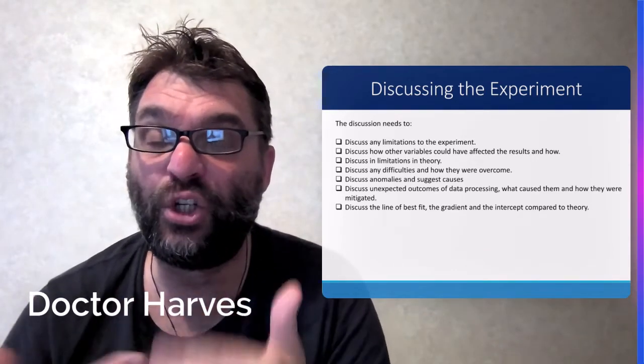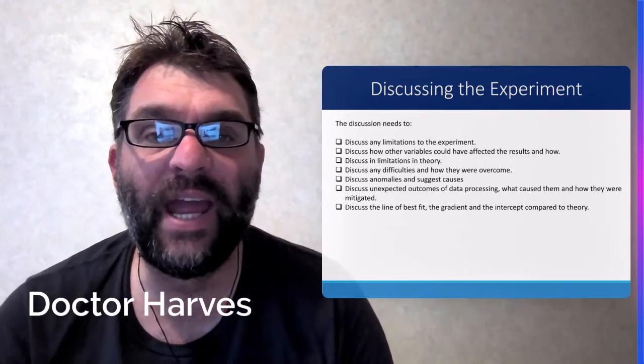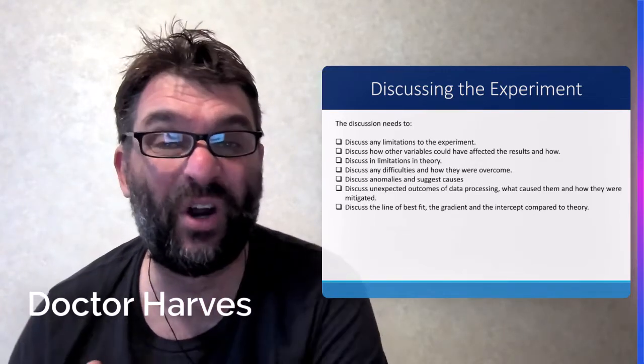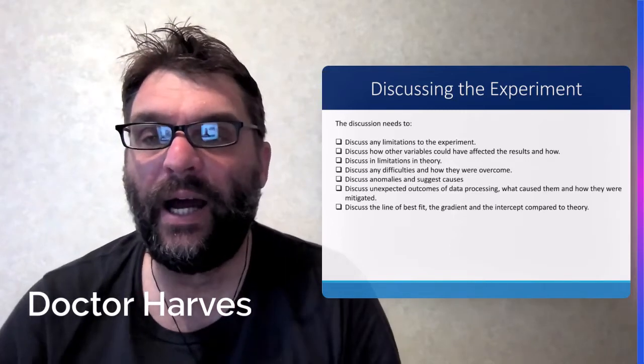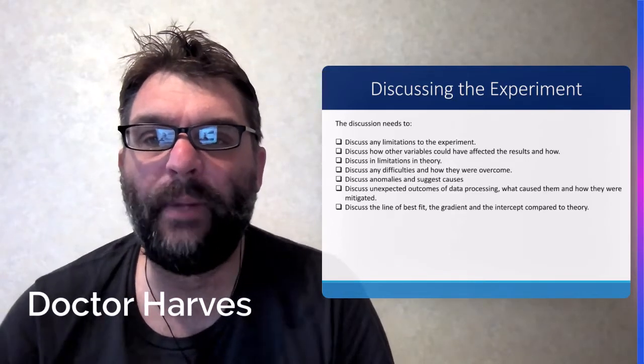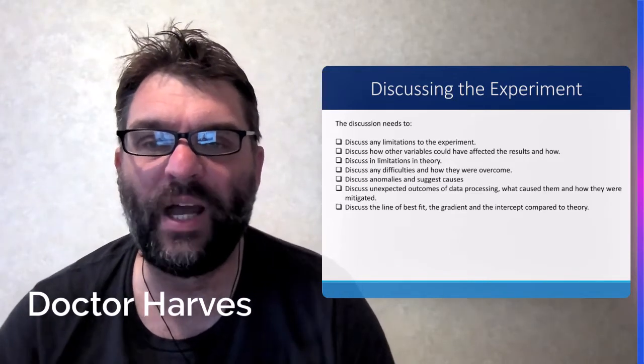So that could be error propagation from your equipment, and how they may be mitigated. So that could be your zero error, your parallax error, your calibration error, taking averages, things like that.